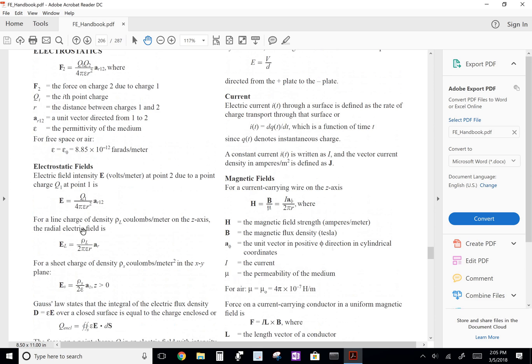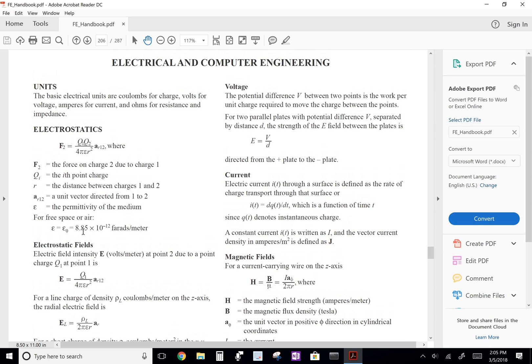The other equation we're going to use, just going up a little bit here under the voltage section, is the intensity E, the E field, is given by the voltage divided by D. And D is the distance between the parallel plates.